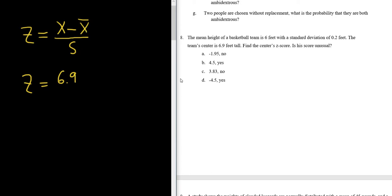So the mean here is right here, mean height of a basketball team is 6 feet, so minus 6, and then divided by, the standard deviation is right here, 0.2 feet, so 0.2.